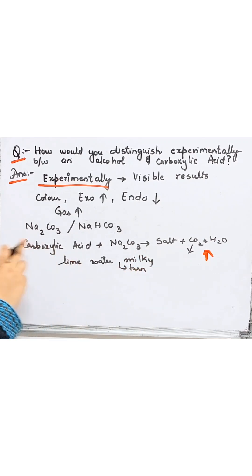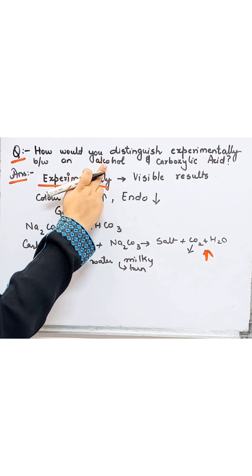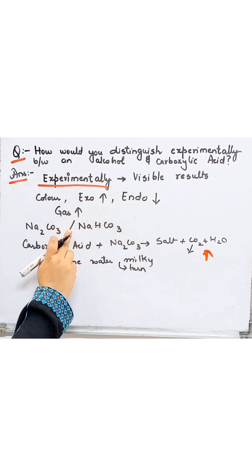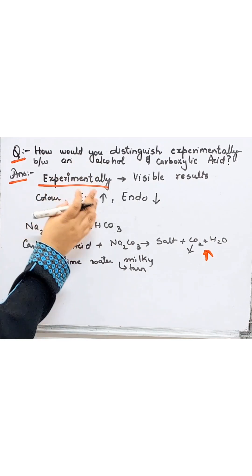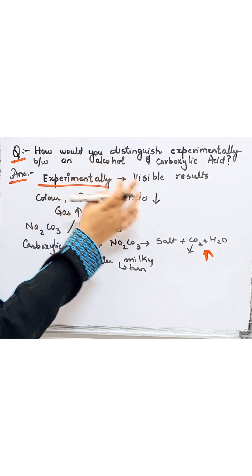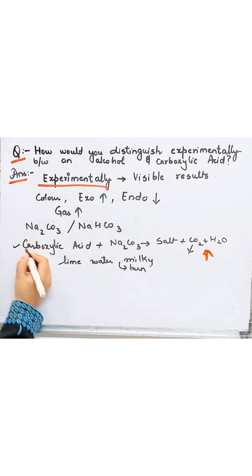So here we can find out that whether the—and if we react alcohol with sodium carbonate, there will be no reaction. So here we can distinguish either the hydrocarbon, alcohol or carboxylic acid. We'll take one example also.